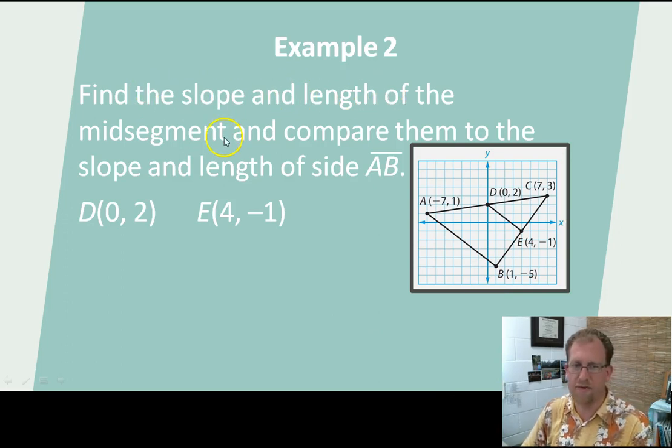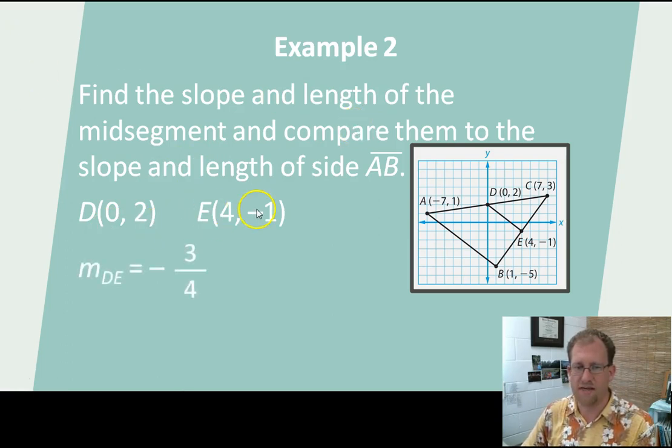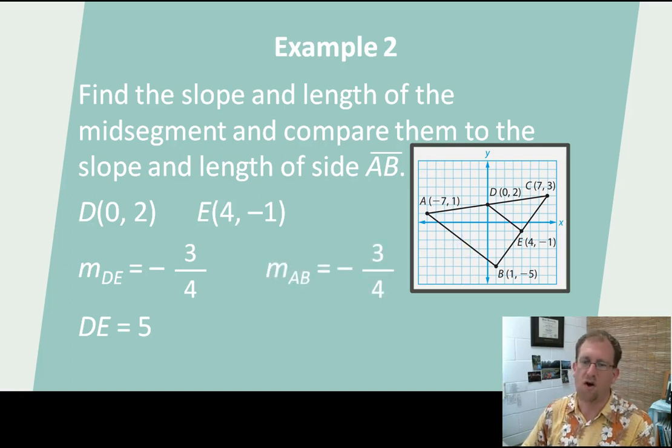Find the slope and the length of the mid-segment and compare them to the slope and the length of AB. So, I have points D and E, and I'm going to find out that the slope is negative three quarters. You remember that the slope for this line was also negative three quarters. The distance here is five, and you'll remember that the distance for this was ten. So, in fact, we now have discovered something interesting about mid-segments.